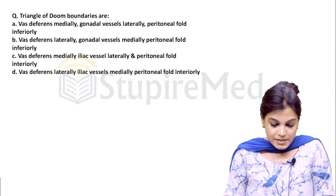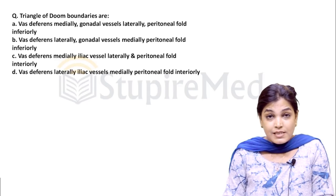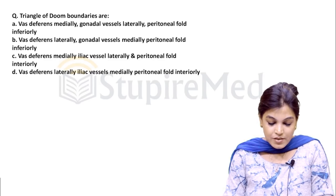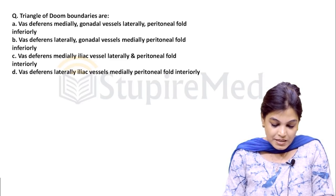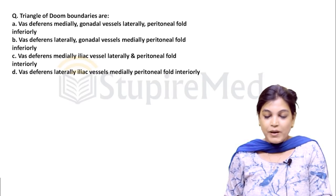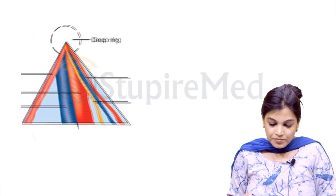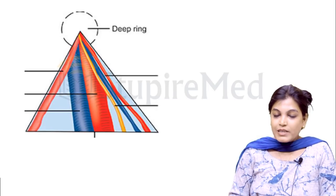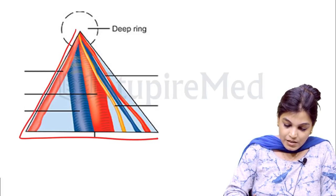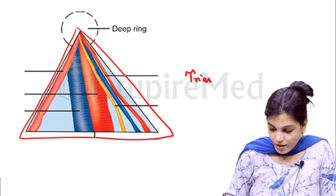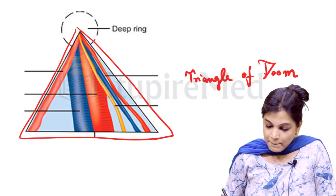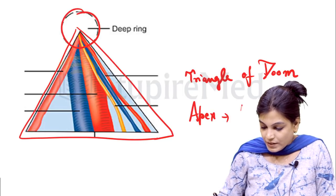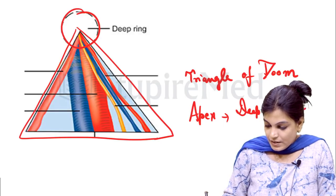Next question: triangle of doom boundaries. Option A is vas deferens medially, gonadal vessels laterally, peritoneal fold inferiorly. Option B is vas deferens laterally, gonadal vessels medially, peritoneal fold inferiorly. Option C is vas deferens medially and peritoneal fold. Option D is vas deferens laterally, iliac vessels medially, peritoneal fold inferiorly. In this diagram, the triangular area shown is the triangle of doom, with its apex formed by the deep inguinal ring.